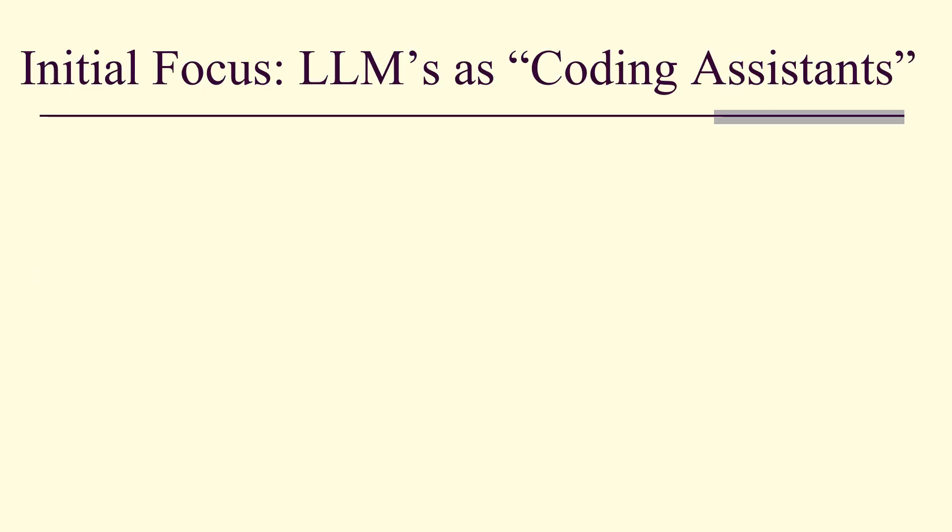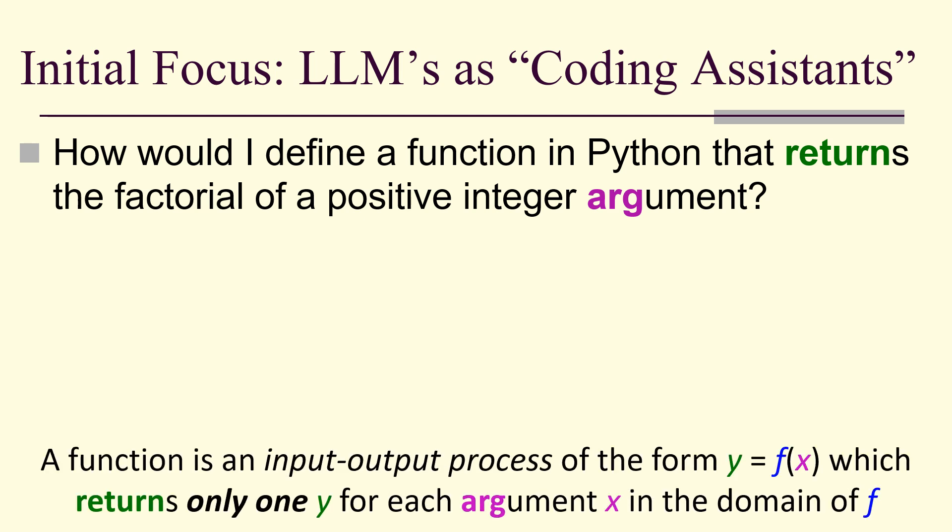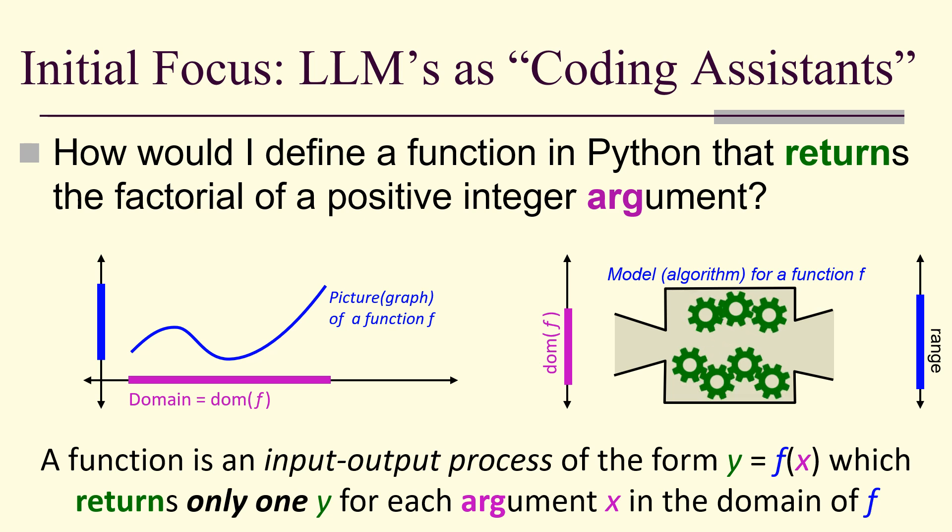So our initial focus: large language models as coding assistance. For example, how would I define a function in Python that returns the factorial of a positive integer argument? Now a function is an input-output process of the form y = f(x) which returns one and only one y for each argument x in the domain of f. So here is a picture of a function, a graph, but here's what a function actually is: it's a model or an algorithm. The key term here is that there's one, one and only one y for each x - one and only one return for each argument.